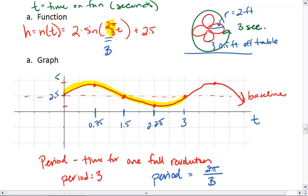So in this case, the period is 2π divided by 2π over 3, which is the same as 2π times 3 over 2π. 2π's cancel, leaving us with 3. It takes us 3 seconds to complete one full rotation.